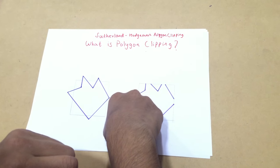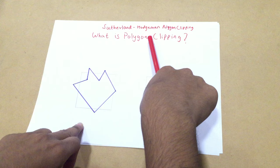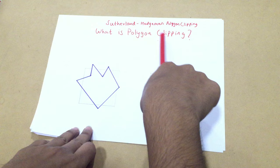Hi guys, so in today's lecture we're going to be learning about the Sutherland-Hodgman polygon clipping algorithm. Before we jump into that, we're going to learn what polygon clipping is. For knowing polygon clipping, you should know what line clipping is. If you don't know about line clipping, we have a video and I'm going to add a link in the description below for that.